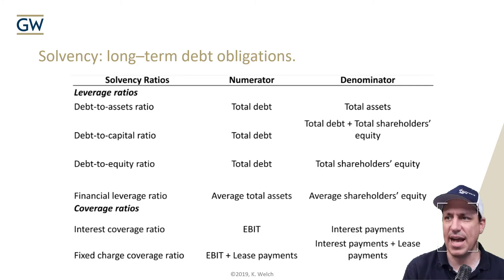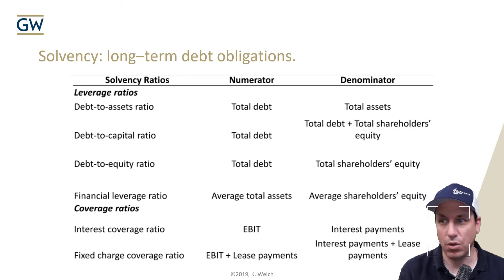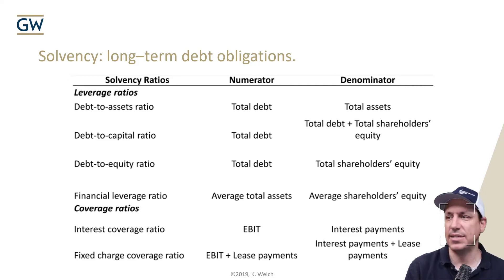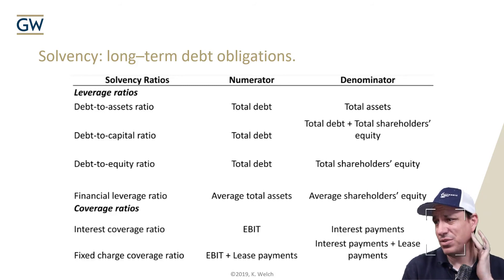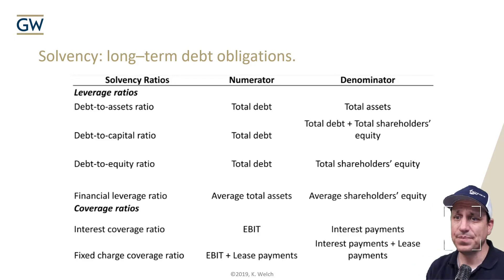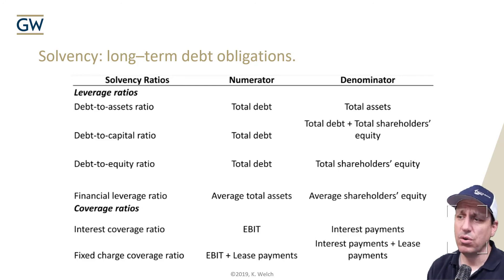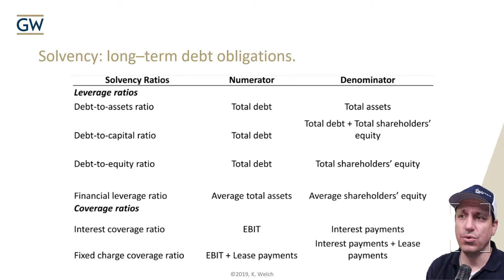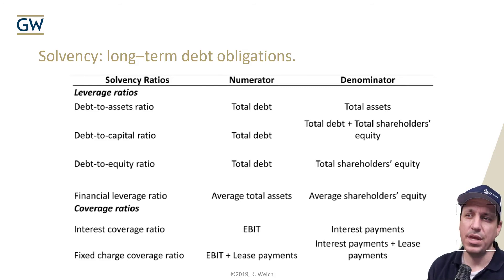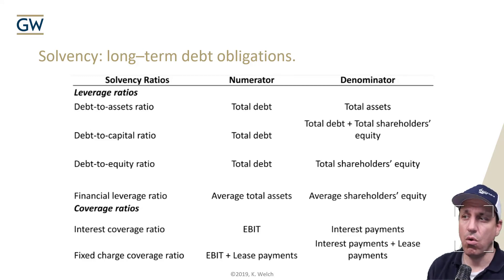The specific leverage ratios include: debt to assets (total debt over total assets); debt to capital ratio (total debt over debt plus shareholders' equity); debt to equity (total debt over total shareholders' equity); and financial leverage ratio (average total assets over average shareholders' equity). A lot of exam questions won't ask you to calculate these, but to think about how they change with different firm events — like increasing debt or impairing assets. The focus is on intuition, not just calculation.